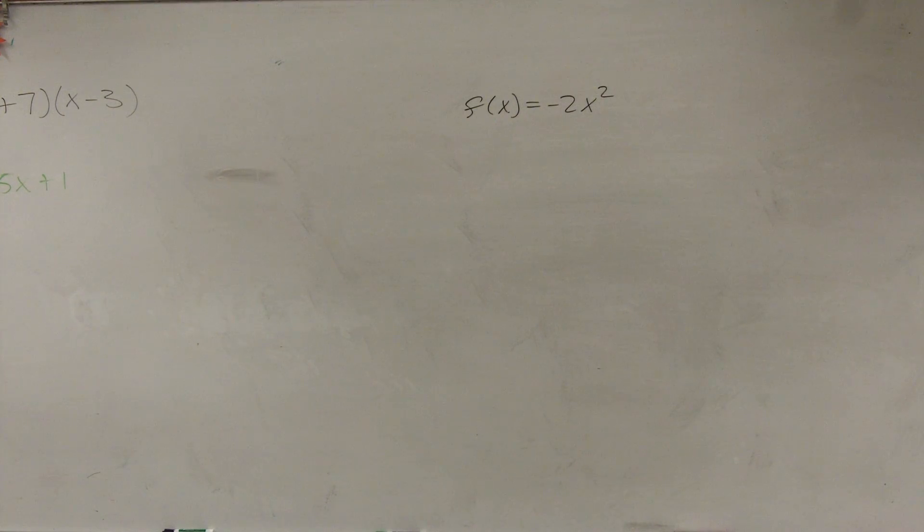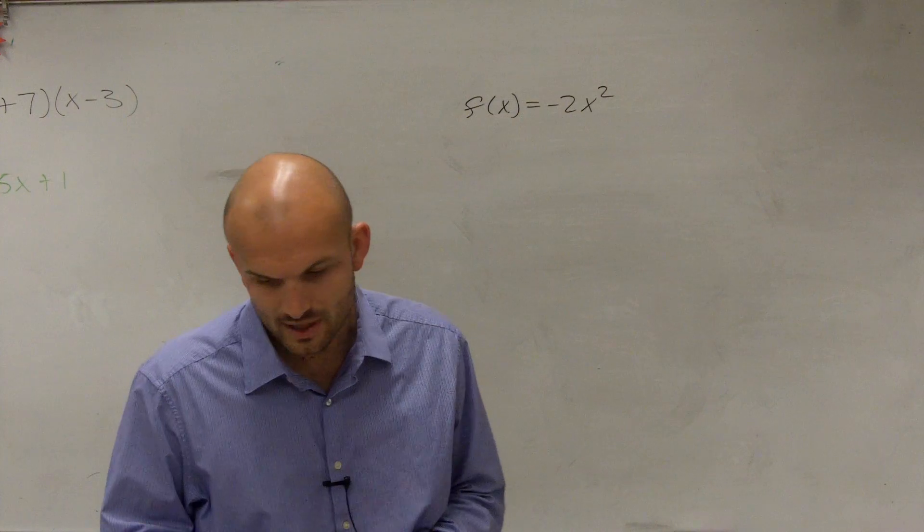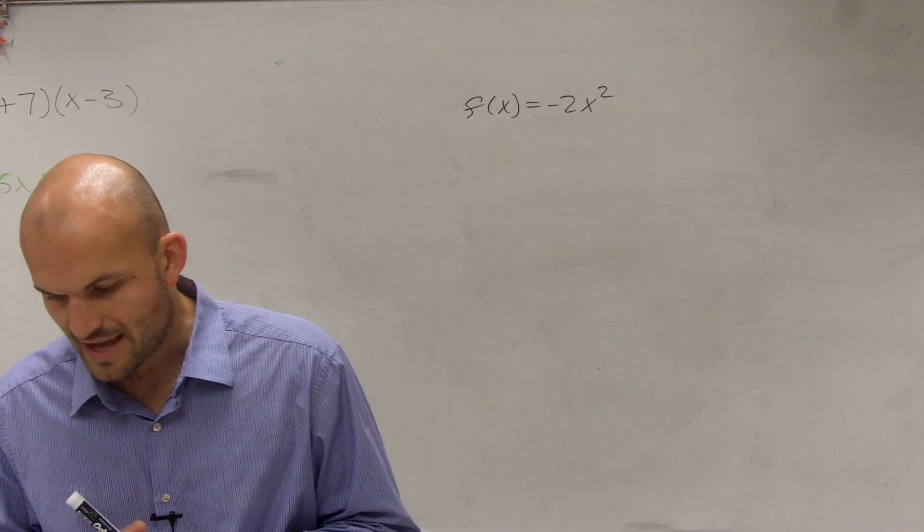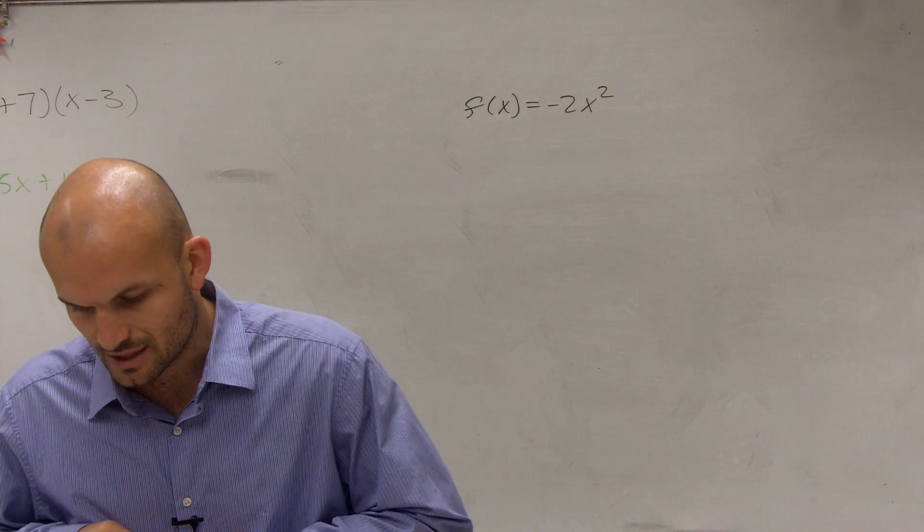So on this problem, I have f(x) = -2x². What they're asking us to do for this problem is to find the y-intercept, the equation of the axis of symmetry, and the x-coordinate of the vertex.